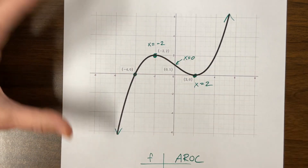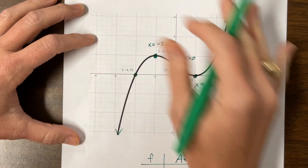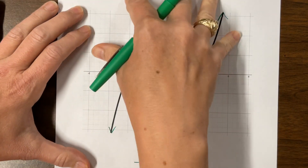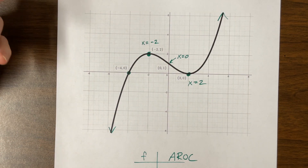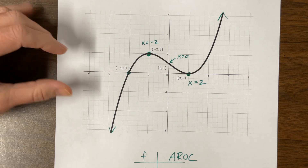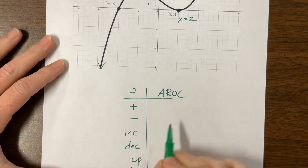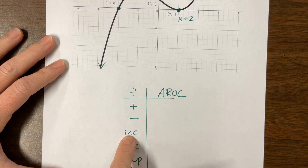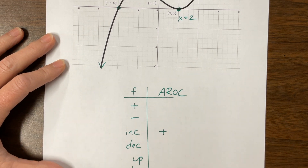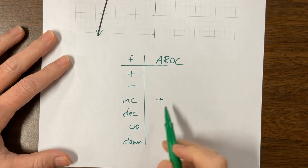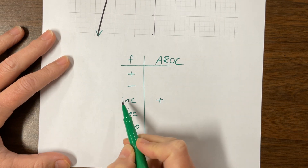Whether the graph is positive or negative tells us absolutely nothing about the average rate of change. I can pick this whole graph up so everything is way above the x-axis, and it doesn't change whether it's increasing, decreasing, concave up, or concave down. If the graph is increasing, our average rate of change will be positive. If we know the average rate of change is positive, we can therefore conclude the graph is increasing.